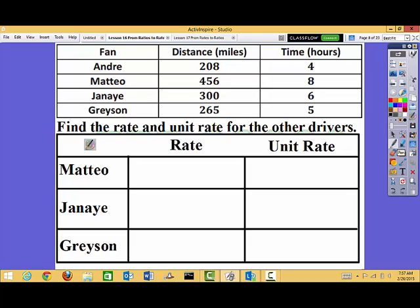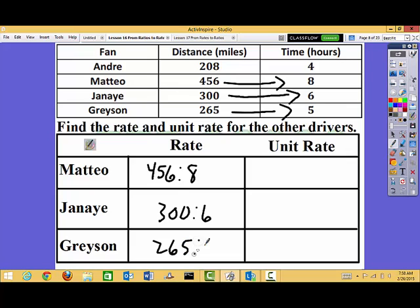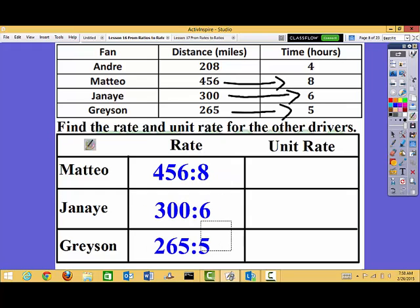456 for Matteo to 8 hours. Janaye is 300 to 6. And Grayson is 265 to 5. So let's check just to make sure before we go on. Good. Good. And good. Alright. So now what do we have?